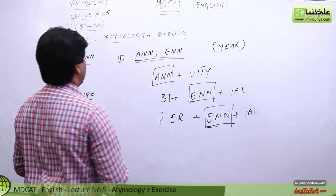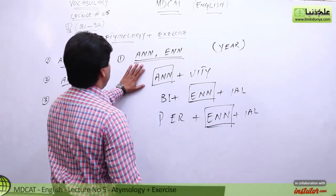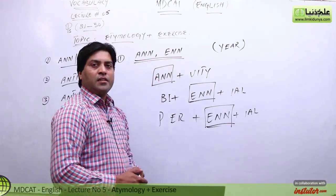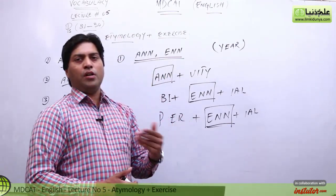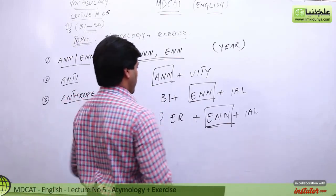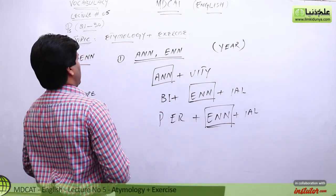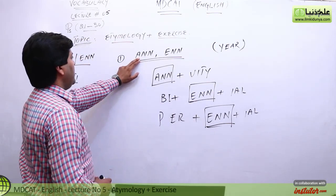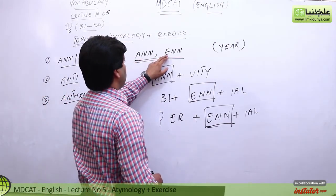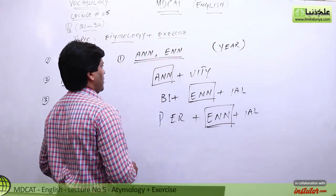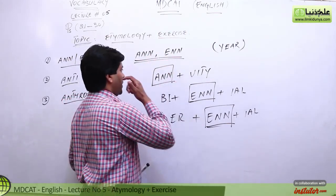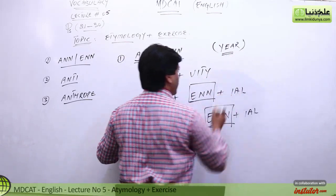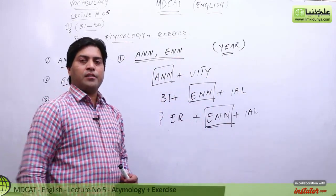Dosto, aaj hum jis unit of letters ki practice pe ja rahe hain — unit of letters jinhe words mein as a prefix, suffix, or in any other position istamal kiya jata hai, yahi aaj hum sikhne ki koshish karenge. Aaj hamara unit of letters hai ANN. Aayiye dekhte hain yeh kis sense mein istamal hote hain. ANN is used in the meaning of 'year' — yani sal.